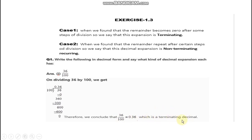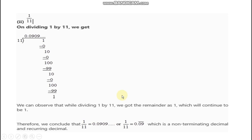This is our terminating decimal because our remainder is 0. Next, you will have a non-terminating example.